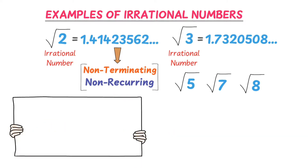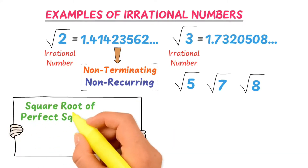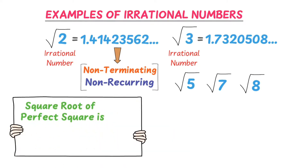Remember that the square root of any perfect square will not be an irrational number. For example, root 9 — we know that root 9 is equal to 3, which is a positive integer. So root 9 is a rational number.